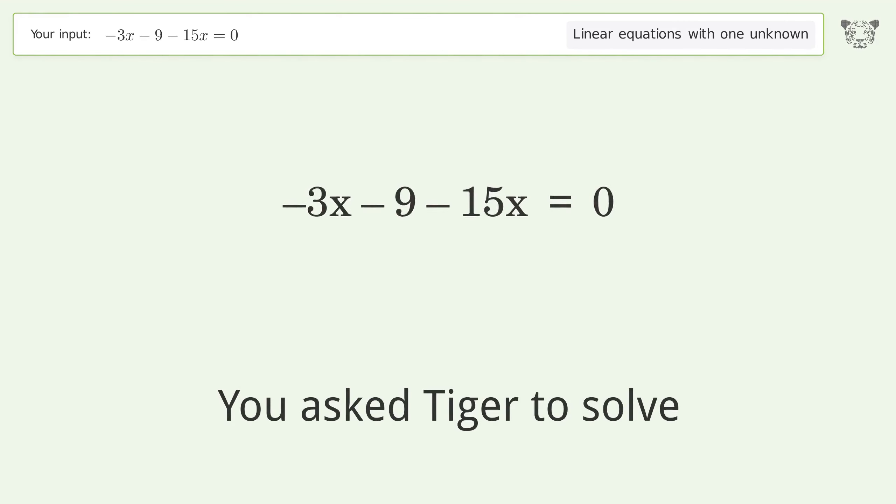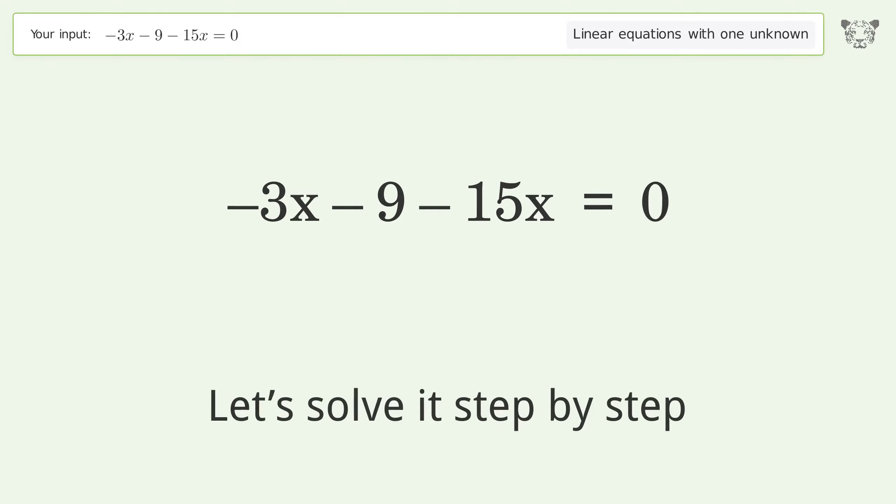You asked Tiger to solve this. This deals with linear equations with one unknown. The final result is x equals negative one over two. Let's solve it step by step.